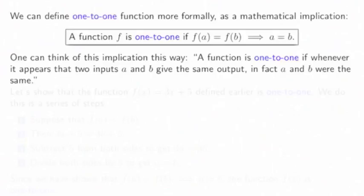We've just said a function is one-to-one if whenever it looks like two inputs gave the same output, in fact the original inputs a and b were equal.